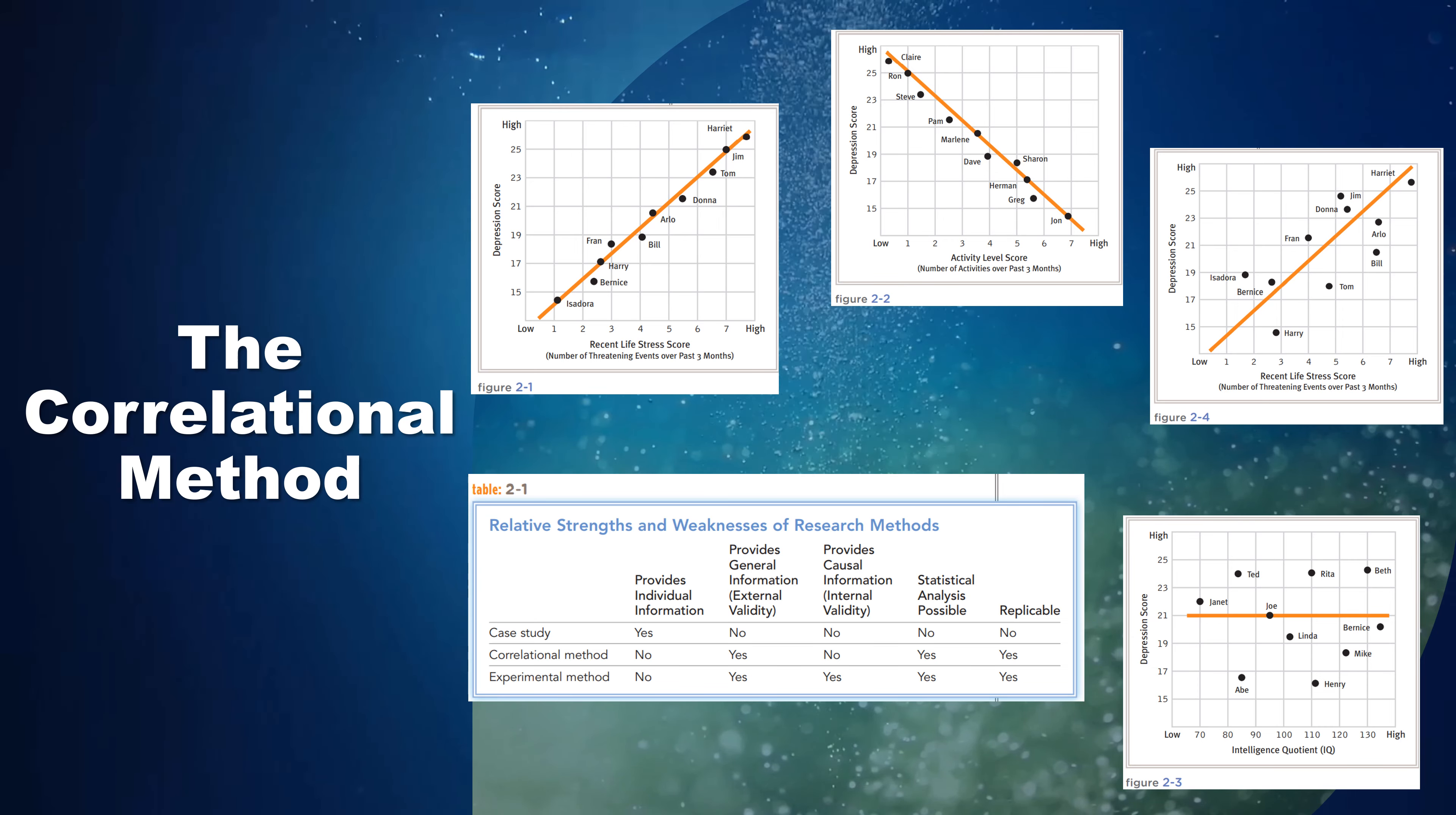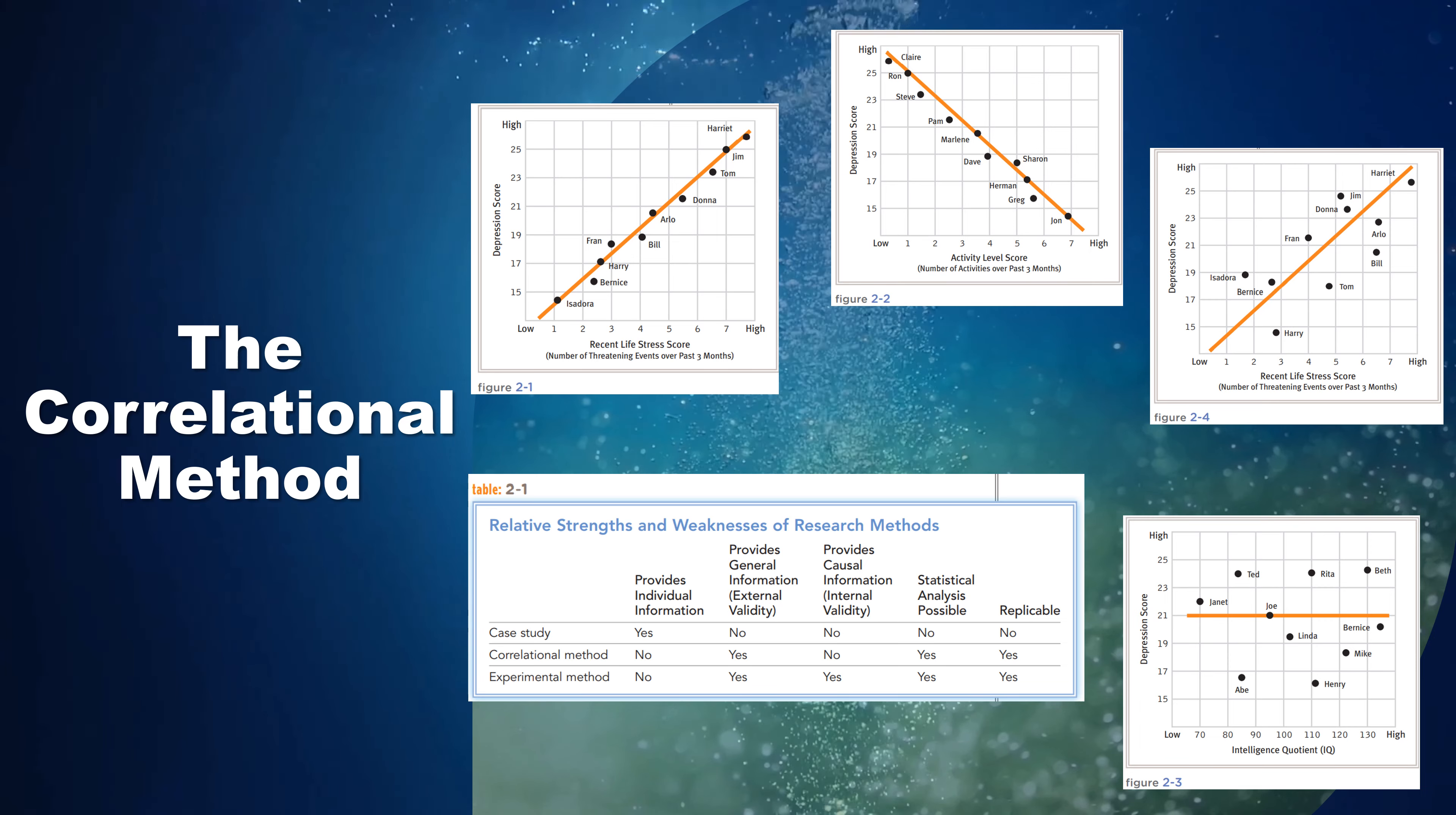Positive correlation: the relationship between amount of recent stress and feelings of depression shown by this hypothetical sample of ten participants is a near-perfect positive correlation.